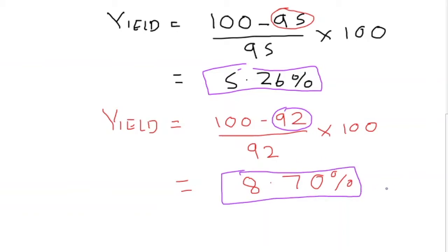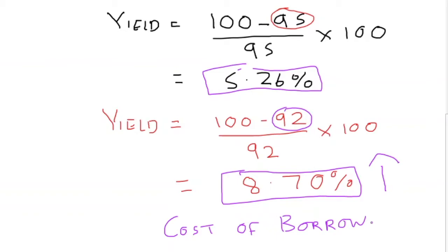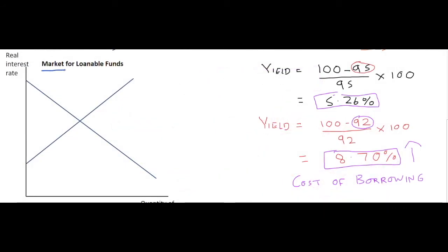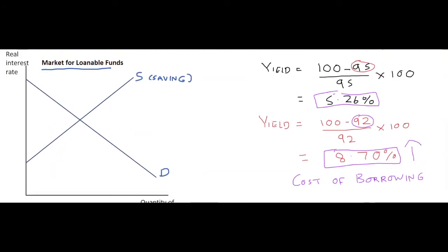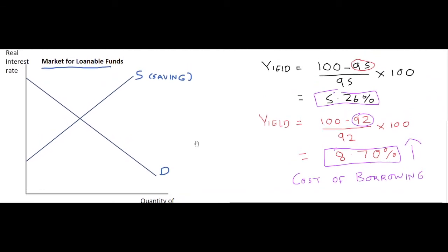The interest rate on bonds increases, making it more difficult for the government to pay back their debt. The cost of borrowing increases for the government — up to 8.70 percent. Over in the market for loanable funds, we have the supply of loanable funds based on saving in the economy — both private and public, so government and households — and we have the demand for loanable funds. The real interest rate is on the left-hand side and the quantity of loanable funds is on the x-axis.